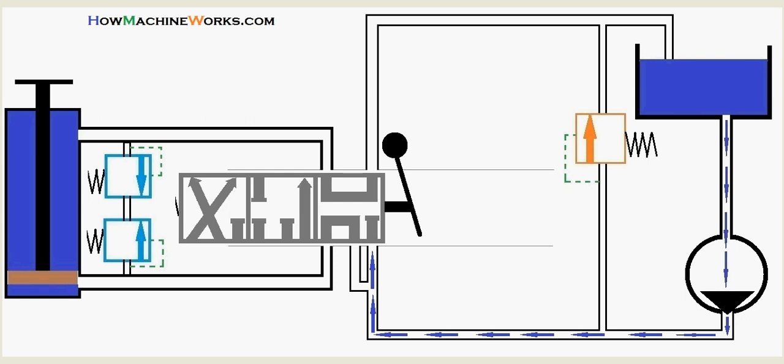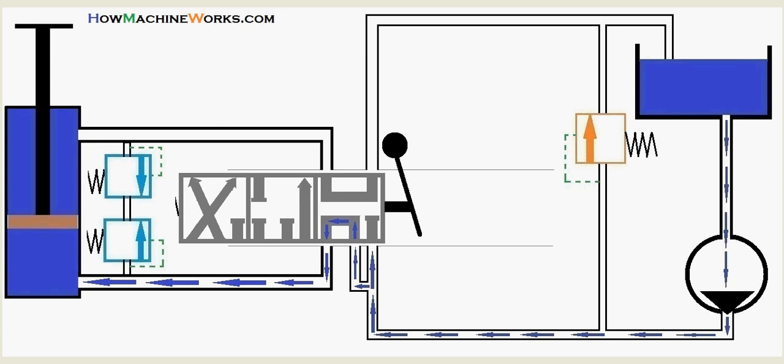Let's see that - the oil goes like this and it is redirected. Now it is going towards the head side. Last time it was going towards the rod side, now it enters the head side, pushing the hydraulic ram towards the top.